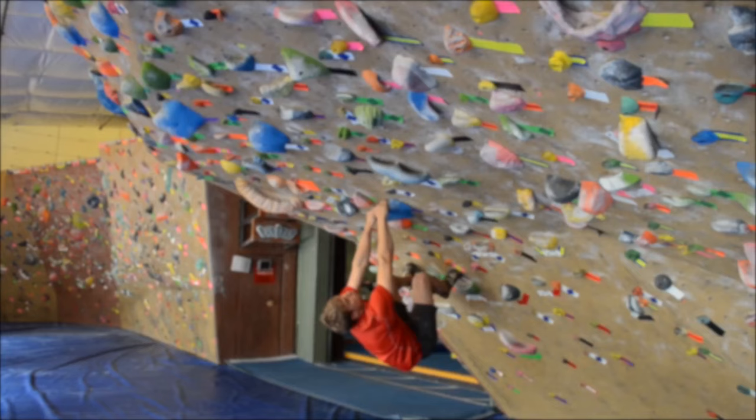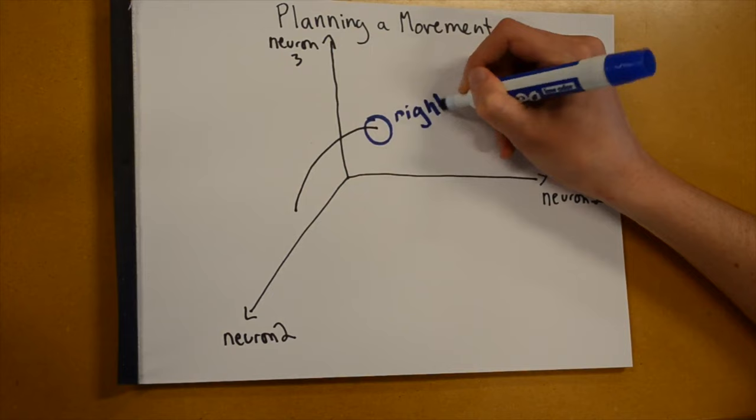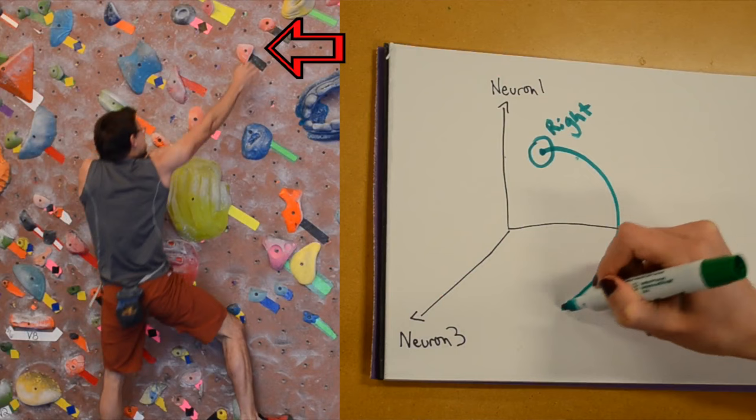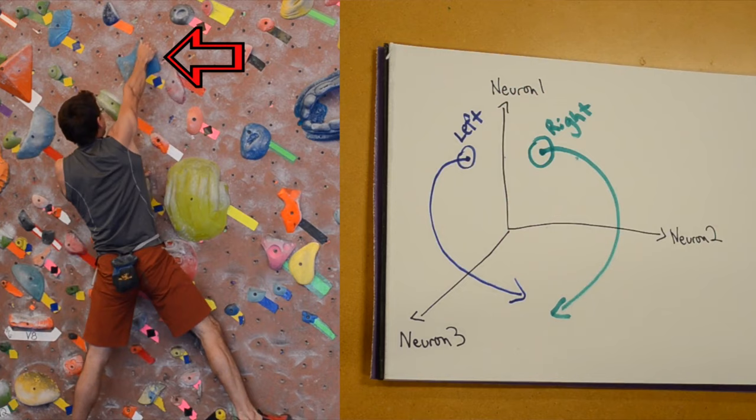In order to make a quick and accurate reach, your brain benefits from having time to plan the movement. When a climber plans a reach, neurons change their activity and bring the system to what we call a plan state. The plan state is different for different movements. If neural activity is in the correct plan state, then reaches can be initiated faster.